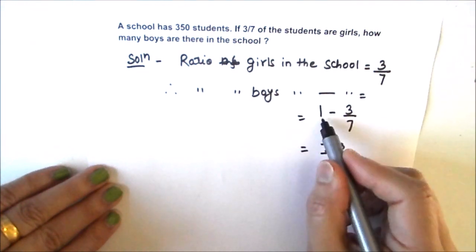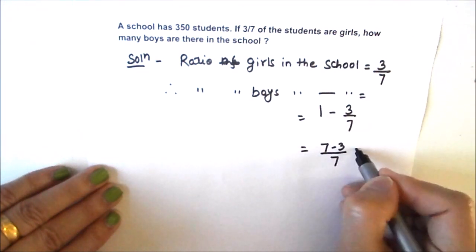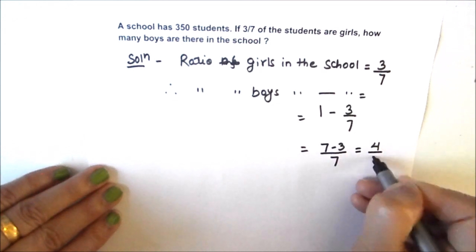This equals 7 minus 3 upon 7. LCM is 7, so 7 upon 7 minus 3 upon 7, which is equal to 4 upon 7.